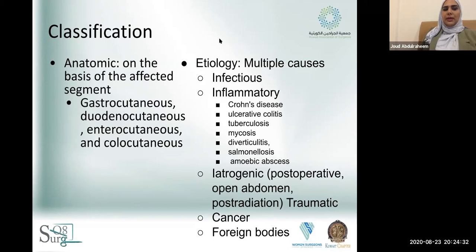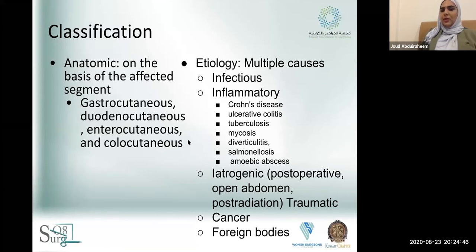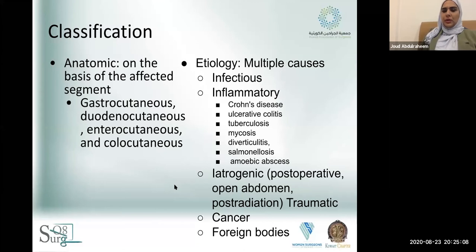We can classify a fistula according to anatomy — based on the affected segment, whether it's the stomach, duodenum, small bowel, or large bowel such as a colocutaneous fistula. We can also classify it by etiology: infectious, inflammatory (including inflammatory bowel disease, TB, diverticulitis), iatrogenic, post-operative in open abdomen cases, after trauma, or due to cancer or foreign body causing perforation.